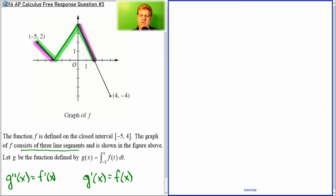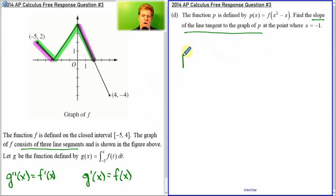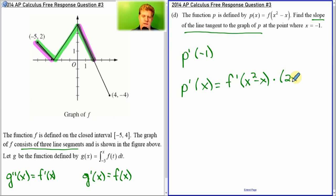Last question for this one. We're looking for the slope of the line tangent to the graph of P. They threw in 'tangent to the graph' to throw you off a little bit — what are you actually looking for? You're looking for P prime of negative 1, because that would be the slope. So let's take the derivative of P. It's f prime of x squared minus x, times the derivative of what's inside because of the chain rule: 2x minus 1.